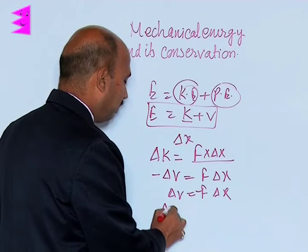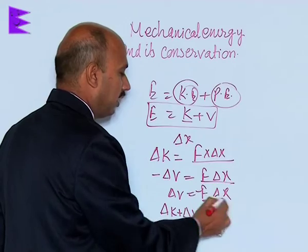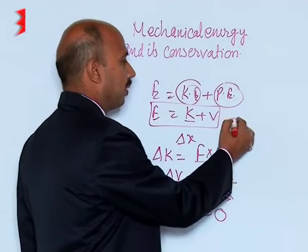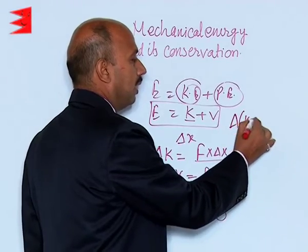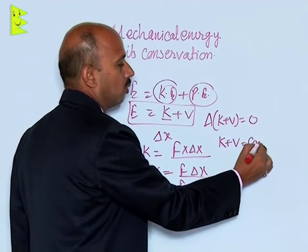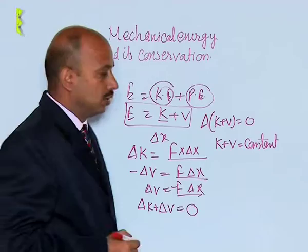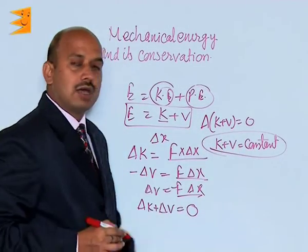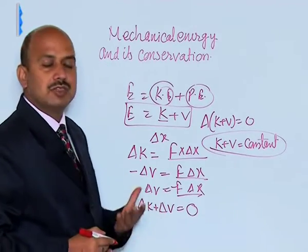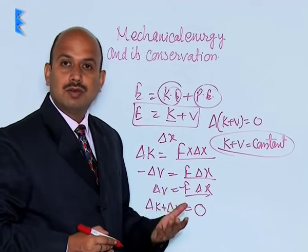The total change in kinetic energy plus change in potential energy is equal to zero. So we can write delta K plus delta V equals zero, that is K plus V equals constant. This is the conservation of mechanical energy — the change in kinetic energy plus change in potential energy remains constant, provided forces are conservative.